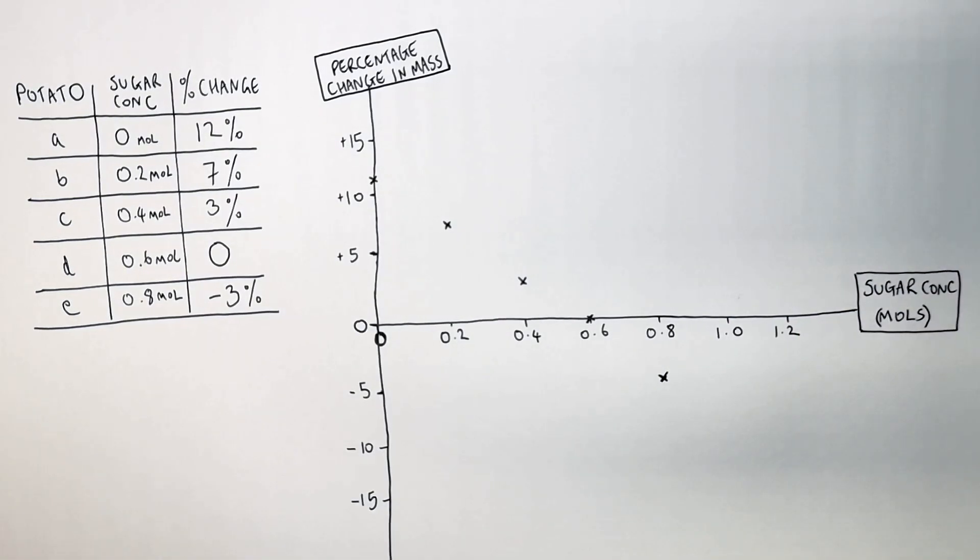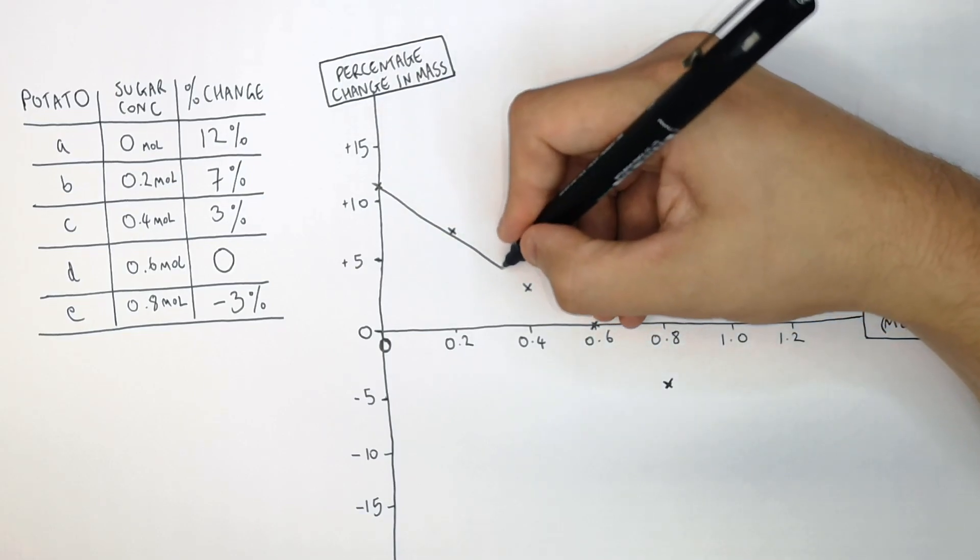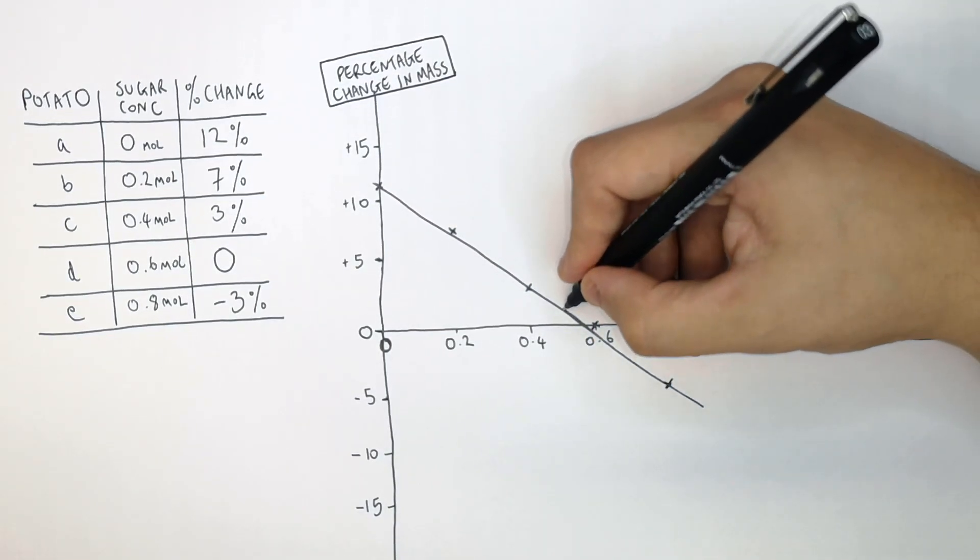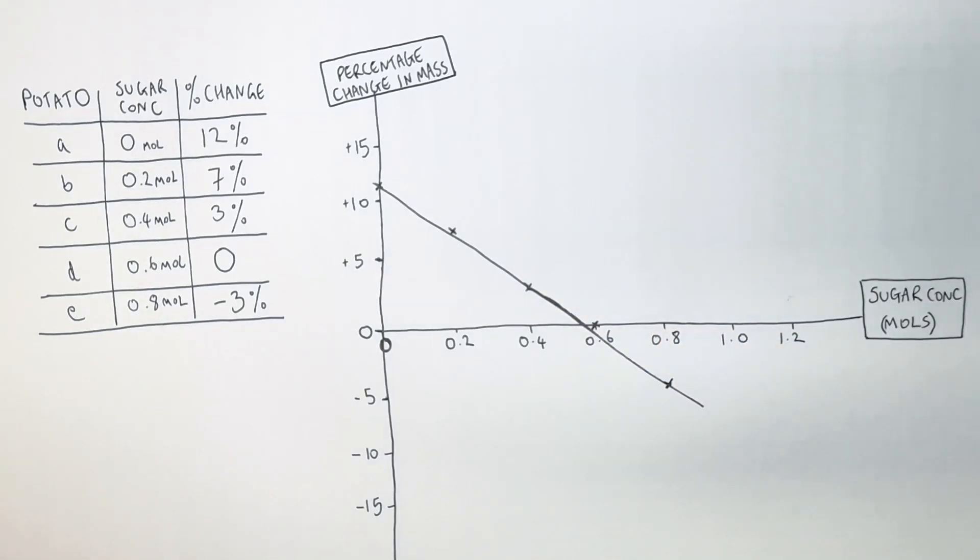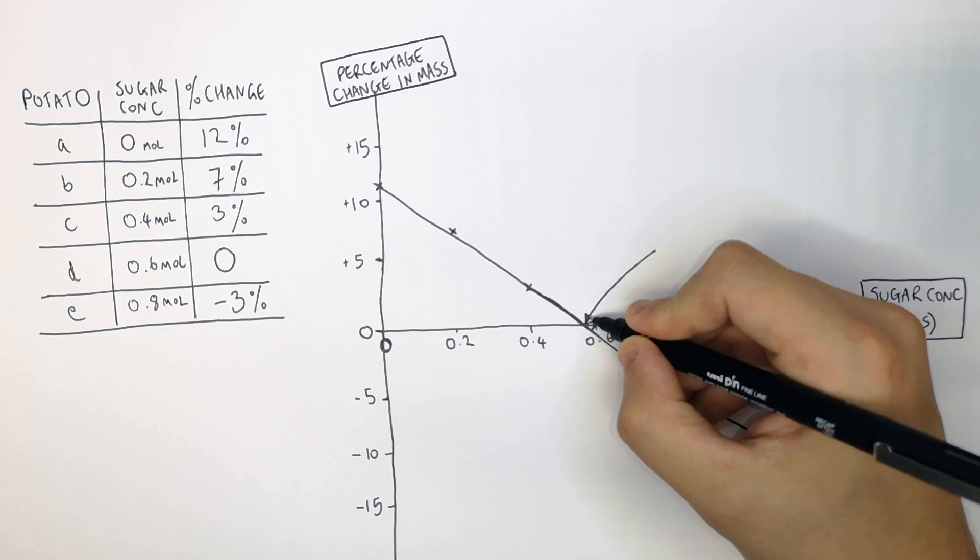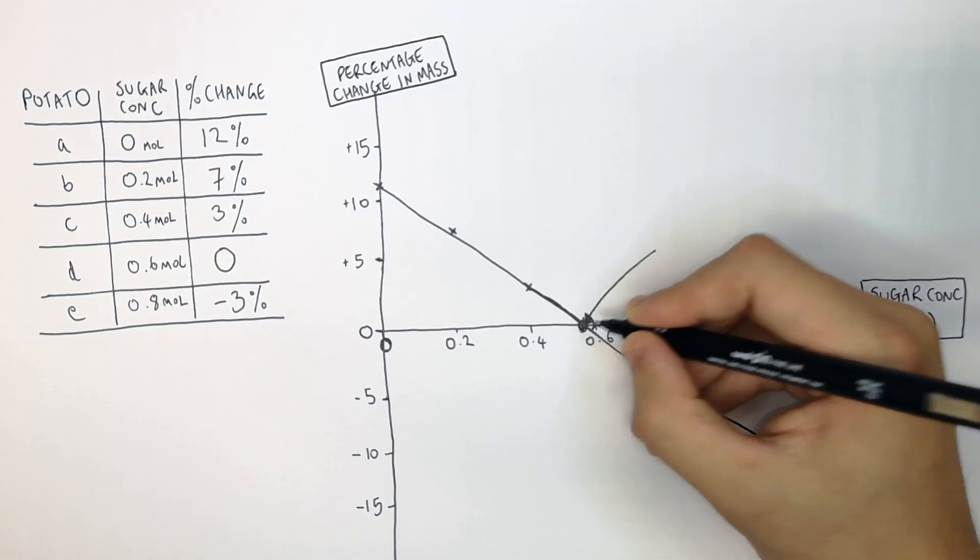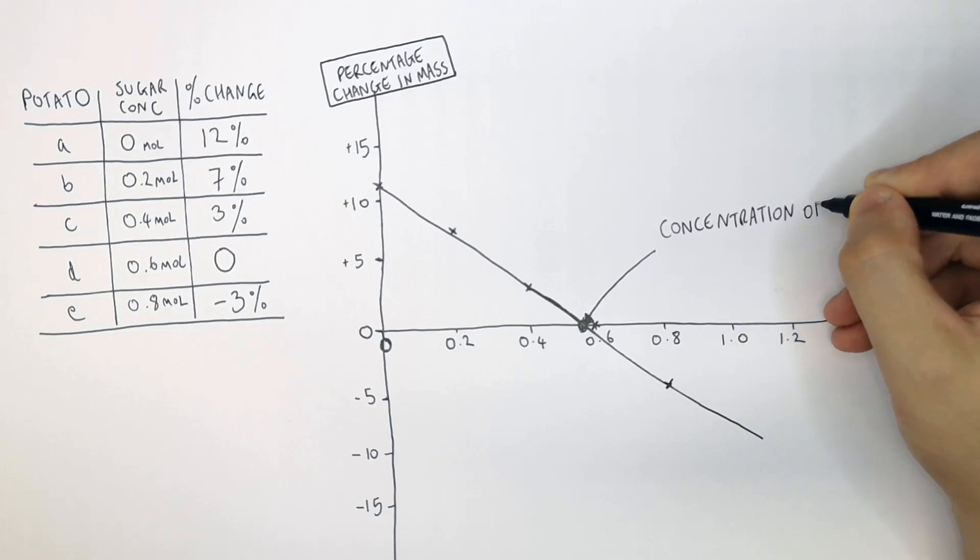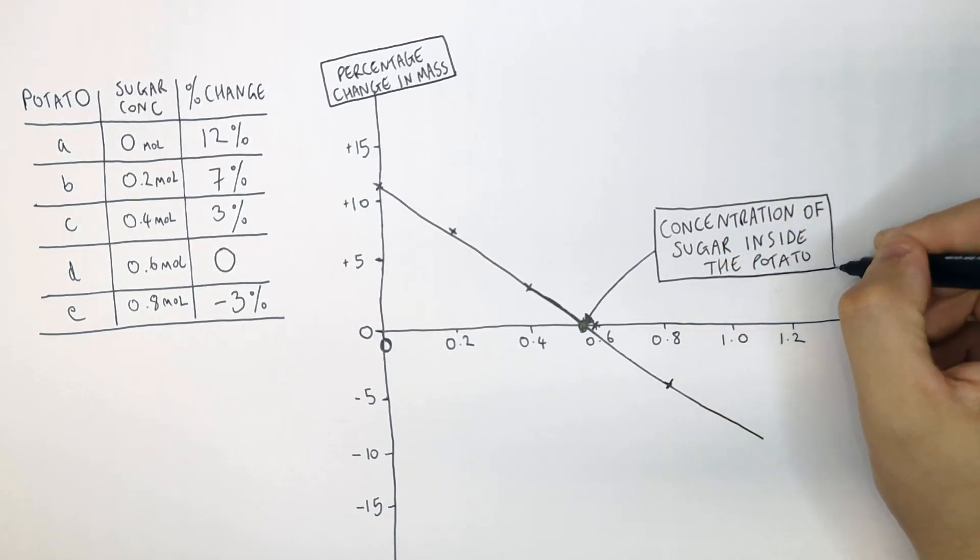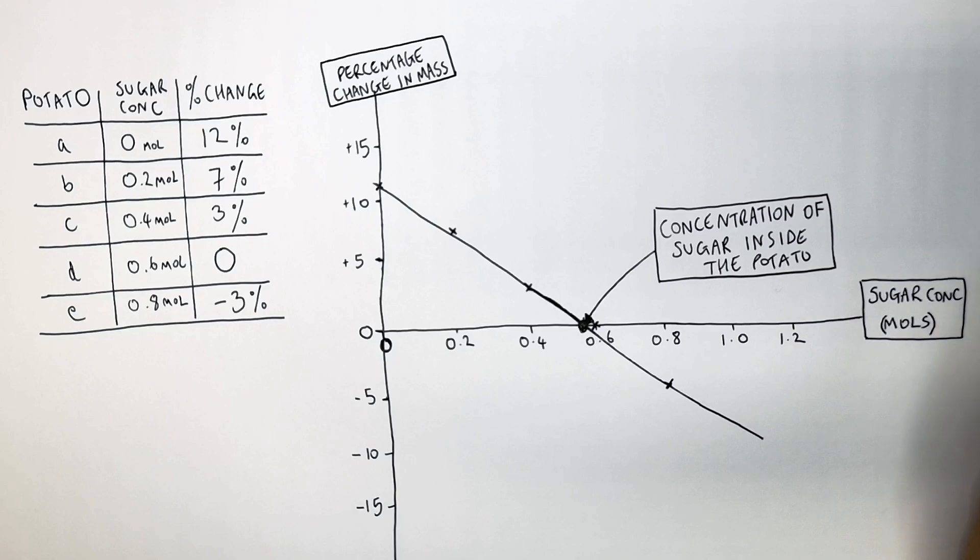You then use a ruler, which I'm stupidly not doing, to draw a line of best fit going through as many of the points as possible. And it is at the point where there is zero percentage change in mass. So it's the point where the line intersects the x-axis, whereby this is the concentration of sugar inside the potato. So the sugar concentration for this experiment inside the potato is approximately just below 0.6 moles.